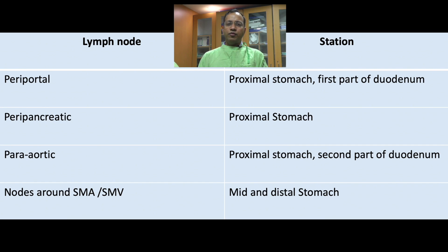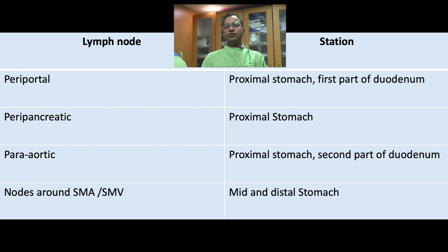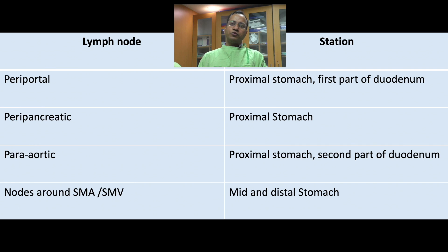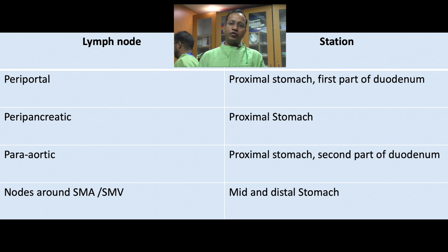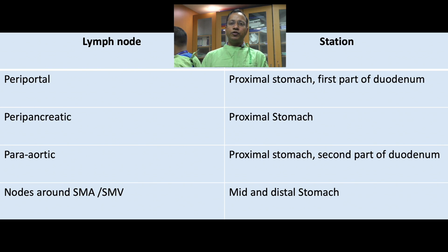We will also cover para-aortic lymph nodes, or lymph nodes which are around the superior mesenteric artery or superior mesenteric vein. These nodes can be evaluated from the proximal stomach, distal stomach, first part of duodenum, and second part of duodenum.